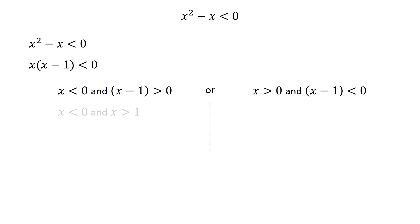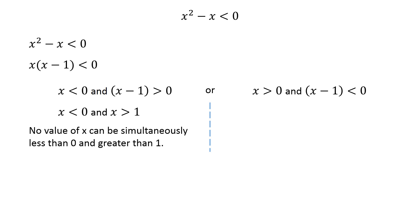In the first case, we have x is less than 0 and greater than 1. No value of x can be simultaneously less than 0 and greater than 1, so there is no value of x that can satisfy this case.